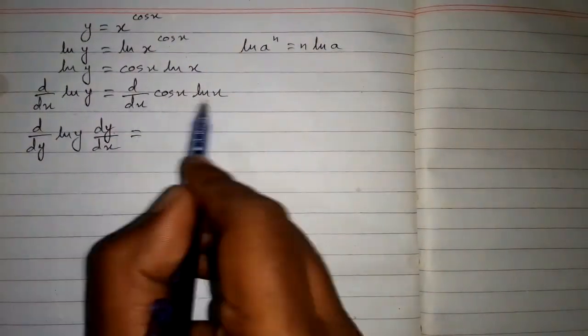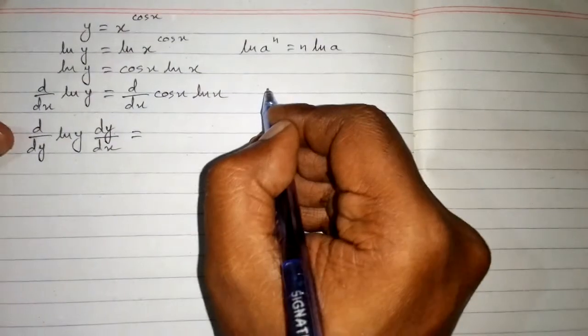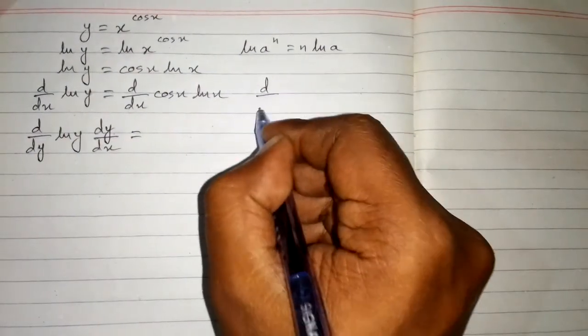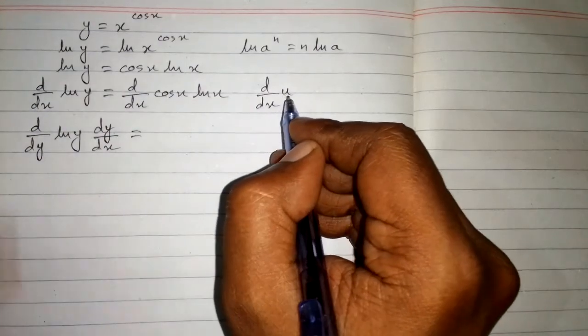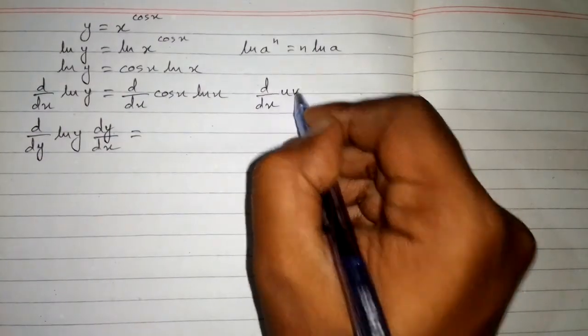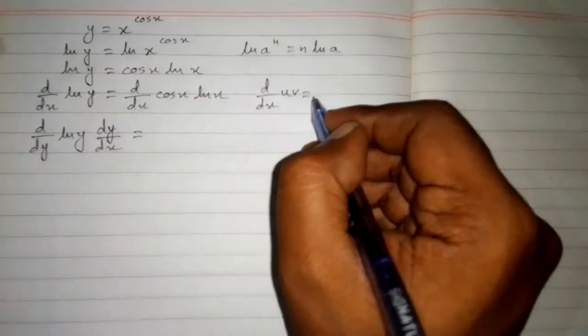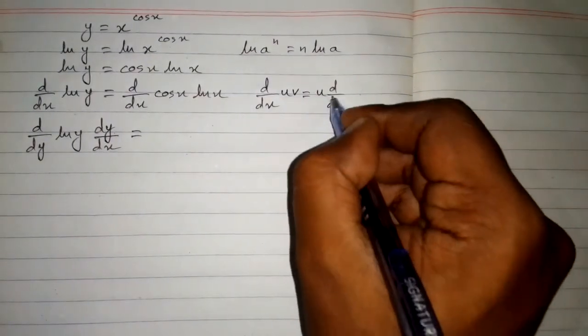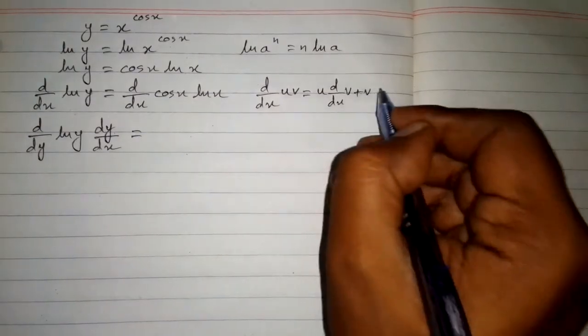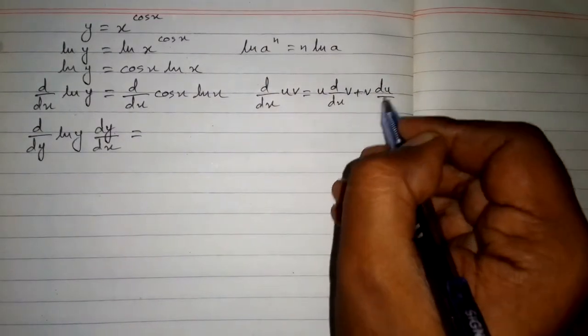And on this side of the equation we will use the product rule of derivative, which is d by dx of uv equals u times derivative of v plus v times derivative of u.